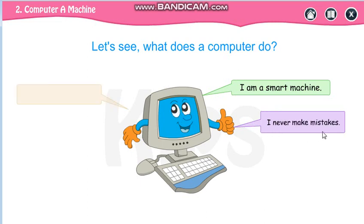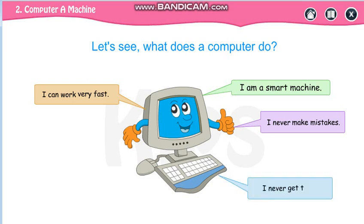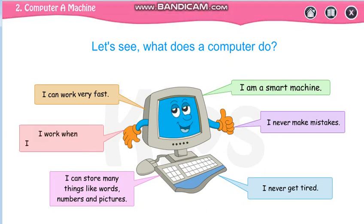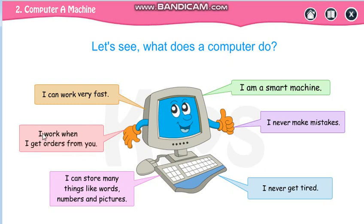The computer says: I never make mistakes — it gives us correct information. I can work very fast. I never get tired. I can store many things like words, numbers, pictures, sounds, songs, and movies. But I work only when I get an order from you — I don't work on my own. You have to run me and give me orders.